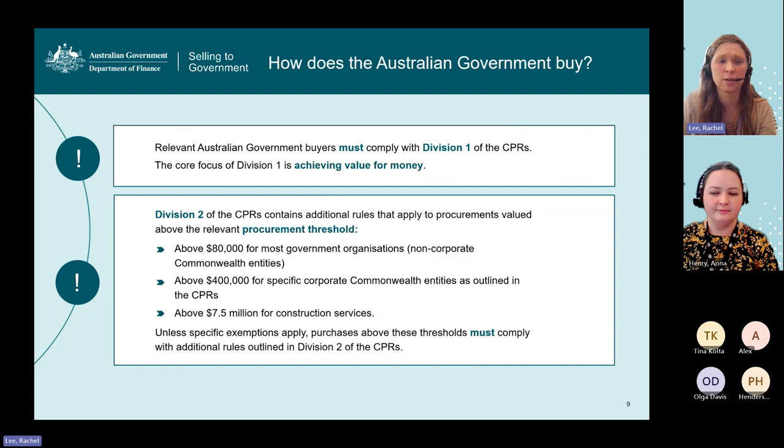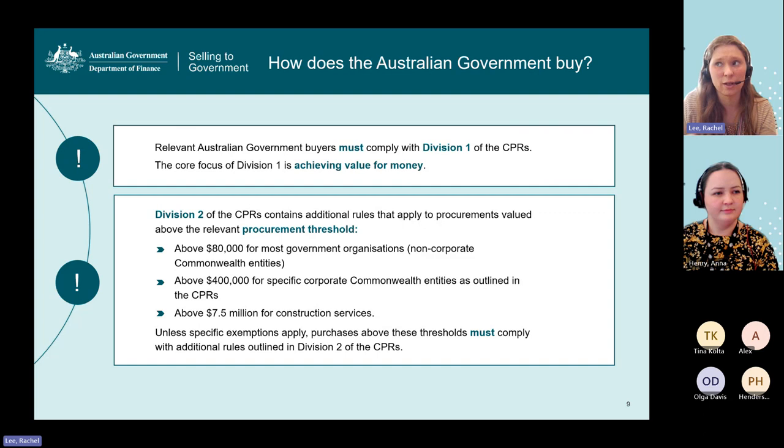Unless specific exemptions apply, purchases above these thresholds must comply with the additional rules set out in division two of the Commonwealth procurement rules. These are really just for your awareness — an Australian Government buyer will be taking the relevant thresholds for their organisation into account when approaching the market to procure goods and services.